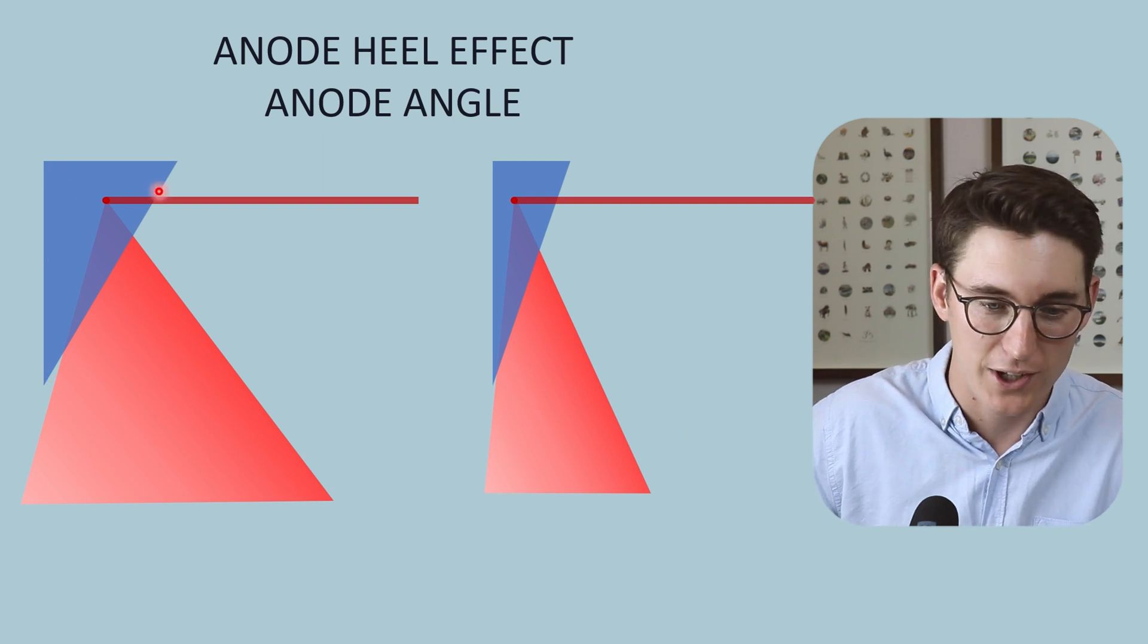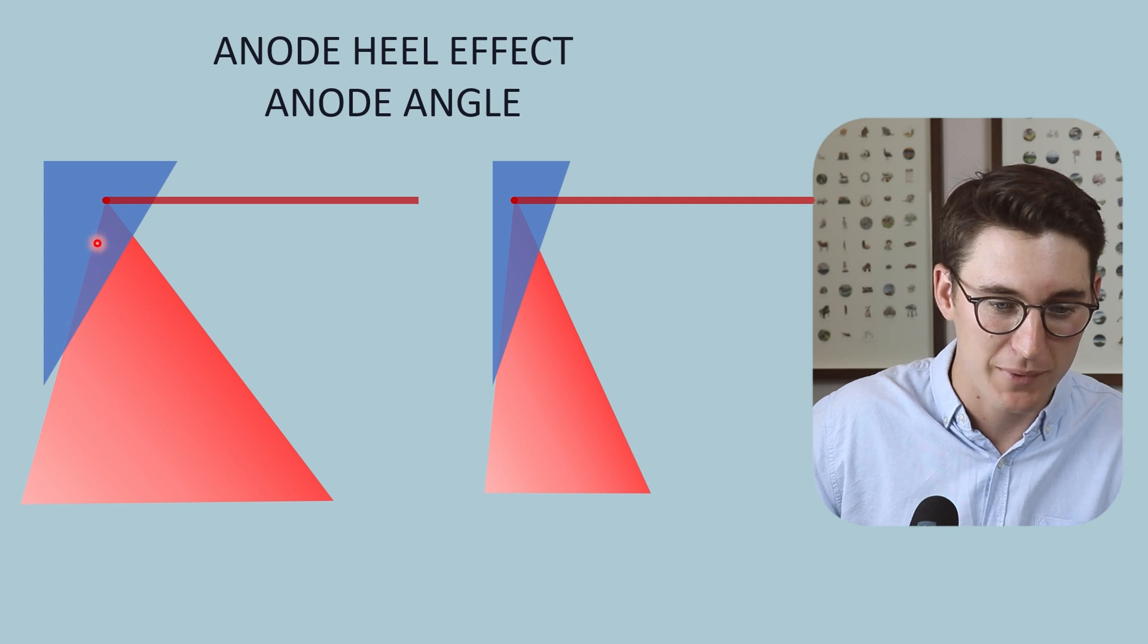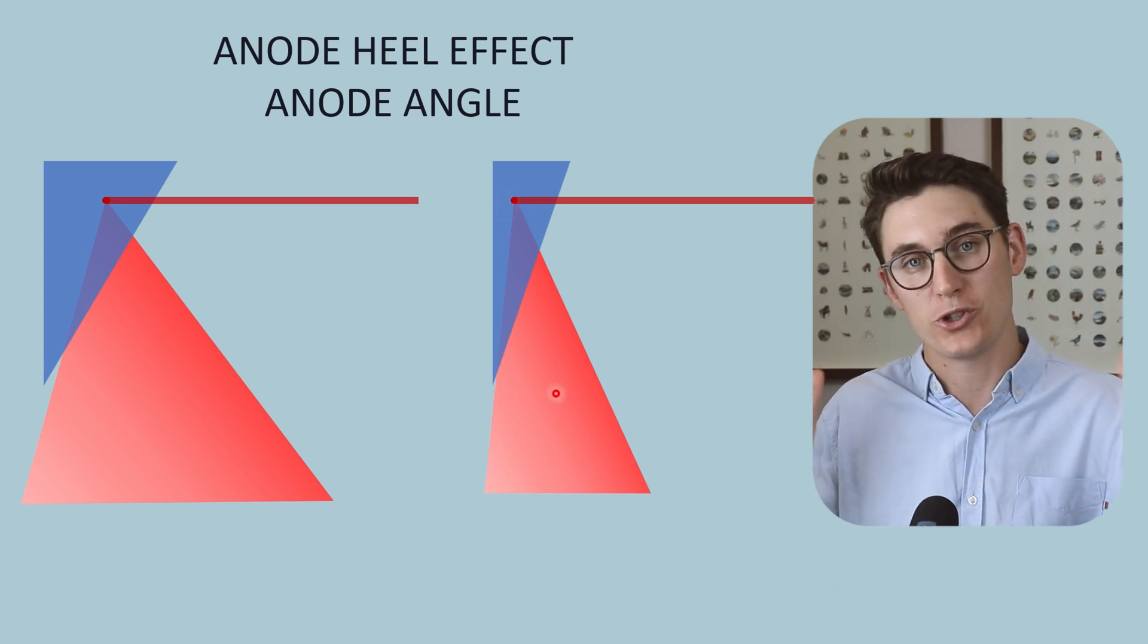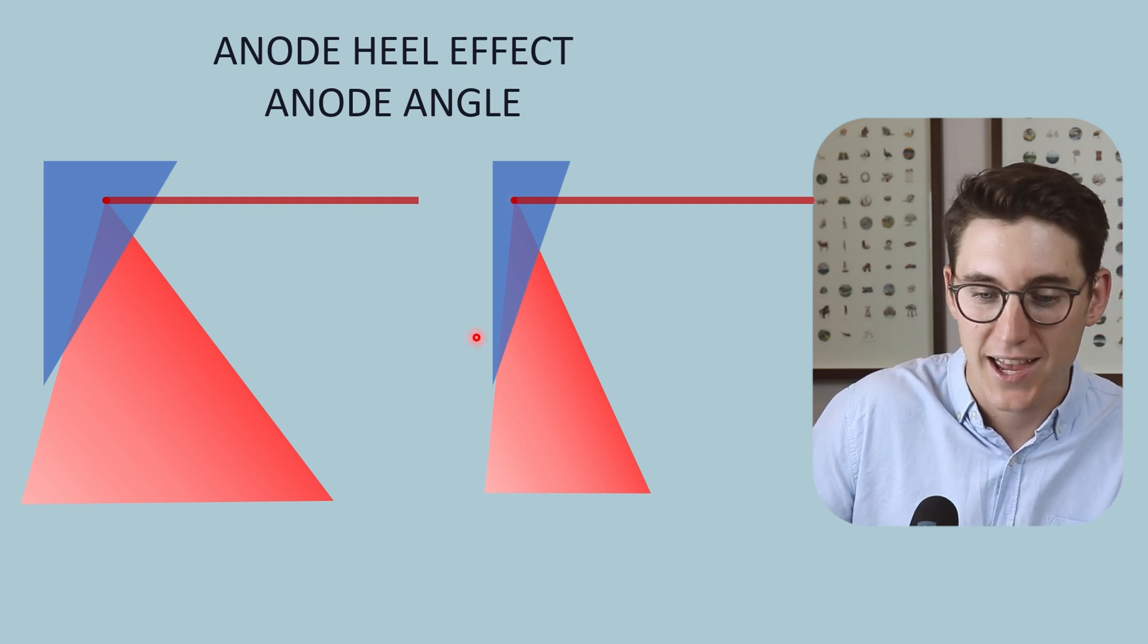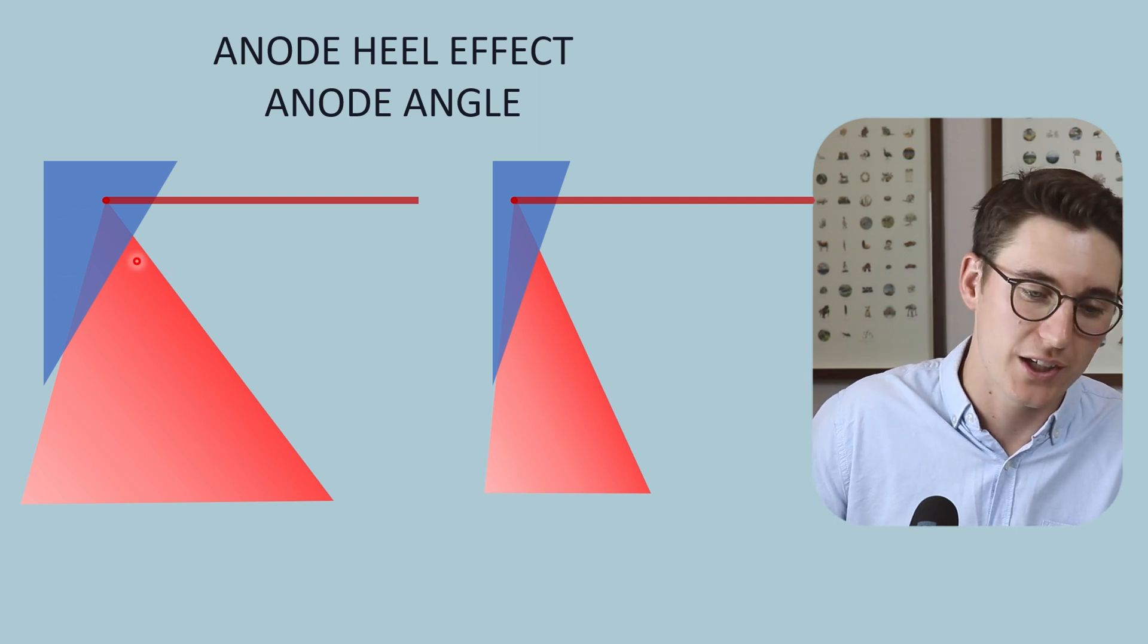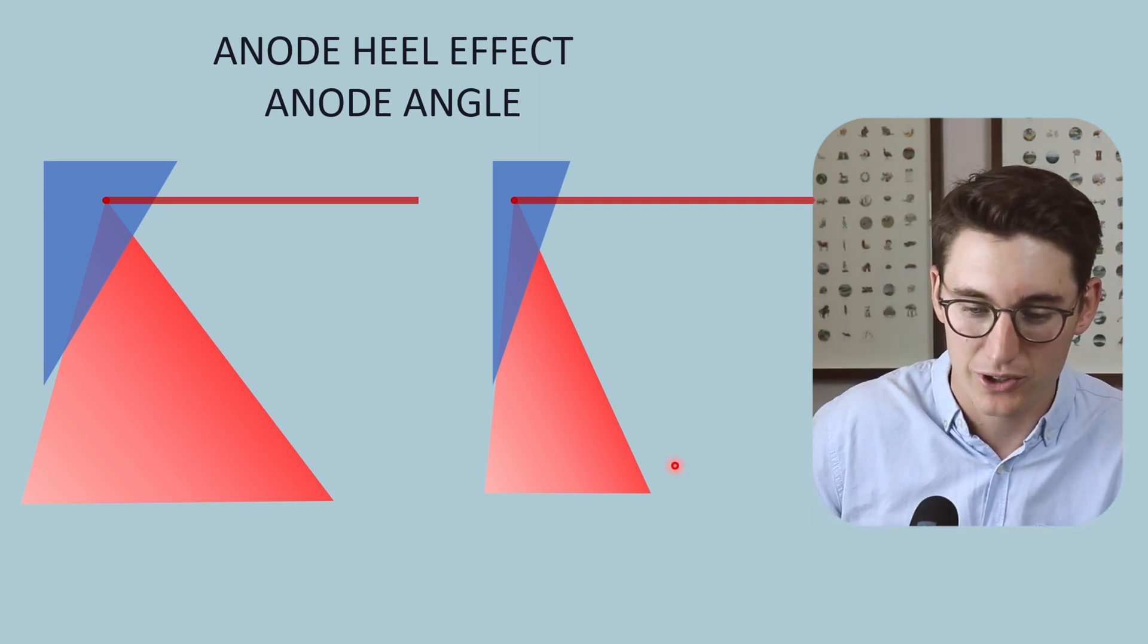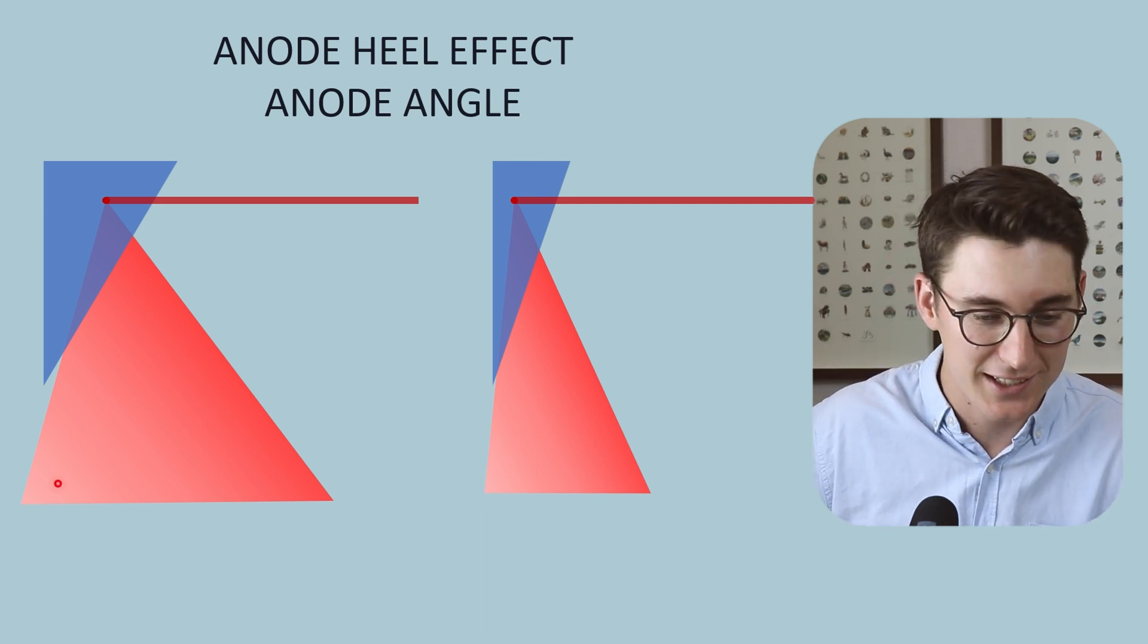You can see that with a larger anode angle, the distance that the anode side of our beam has to travel through the heel of the anode field is less than for a smaller anode angle. When we reduce our anode angle, the heel or the effective heel gets bigger here and our anode side of our field has less intensity than it would in a larger anode angle. Reducing that anode angle increases the heel and increases our anode heel effect. So if you want to reduce the anode heel effect in our x-ray field, we can increase our anode angle.